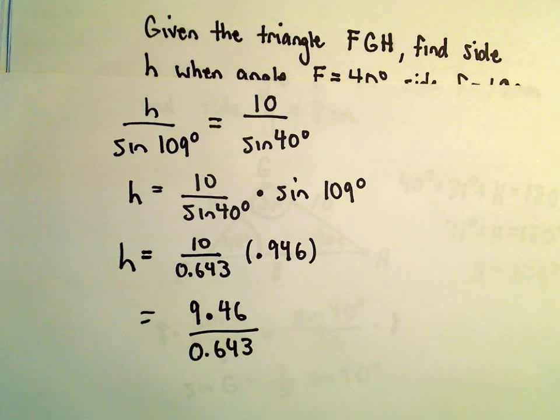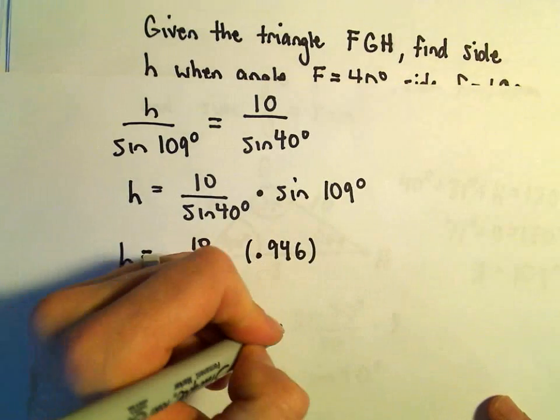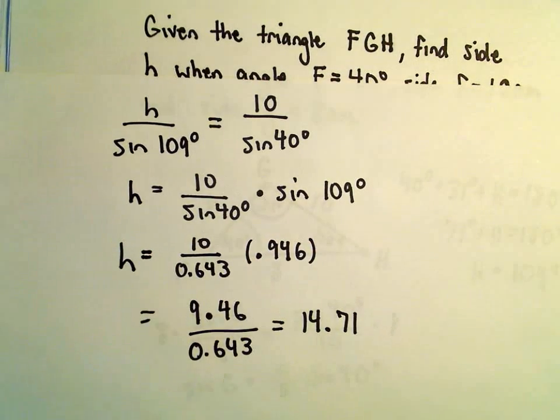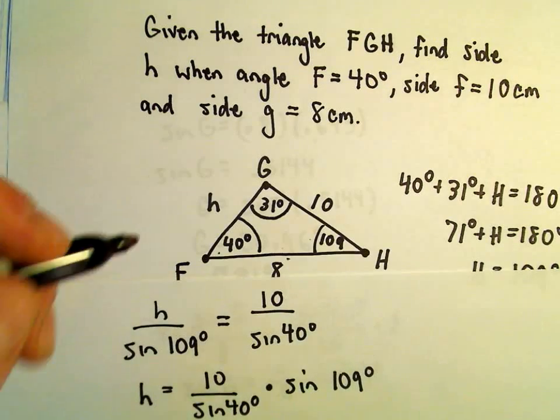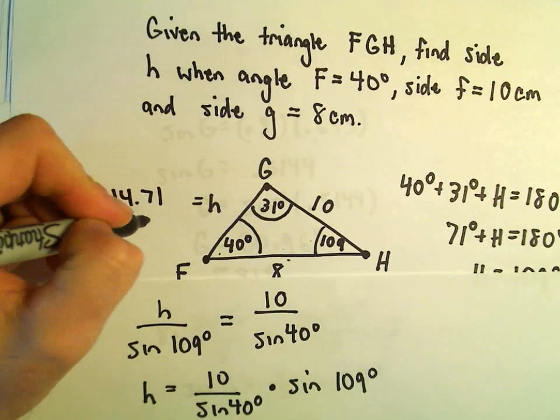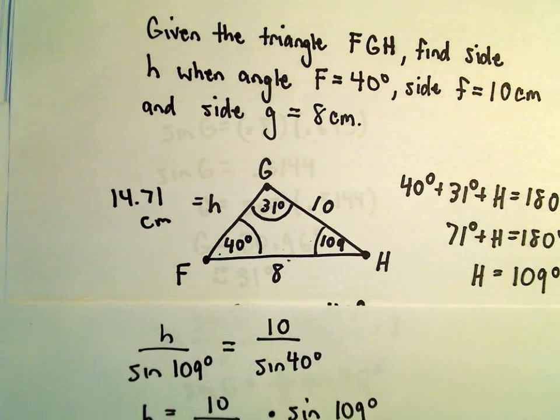So if we divide by 0.643, I'm getting that to be 14.71 roughly. So it looks like to me, this missing side H, that's going to be 14.71 centimeters after we're all done.